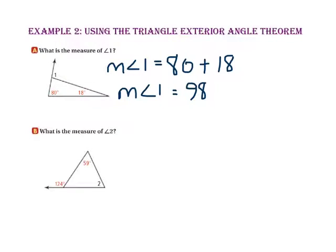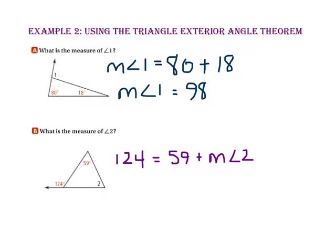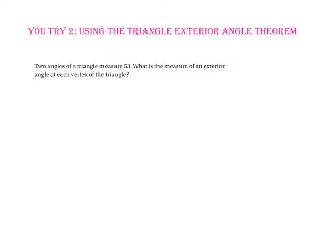In part B, we want to find the measure of angle 2. Since angle 2 is a remote interior angle of the exterior angle 124 degrees, we know that 124 degrees equals the sum of 59 and the measure of angle 2. Using the subtraction property of equality to subtract 59 from both sides, the measure of angle 2 equals 65. Pause the video and do U-try number 2.